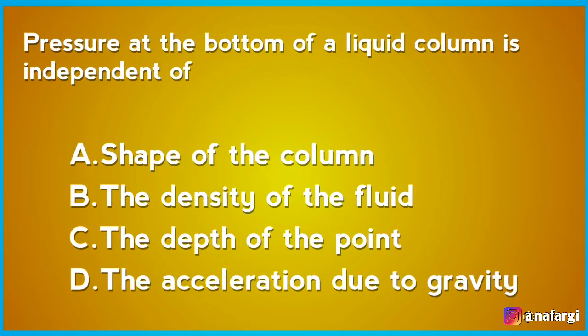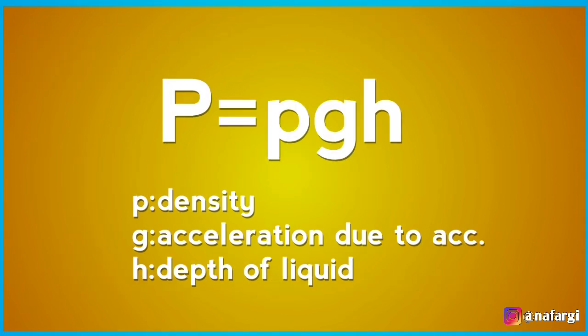Pressure at the bottom of a liquid column is independent of: A the shape of the column, B the density of the fluid, C the depth of the point, D the acceleration due to gravity. The pressure at the bottom is given by P = ρgh — it depends on density, depth, and gravity. It is independent of the shape of the column. The answer is A.